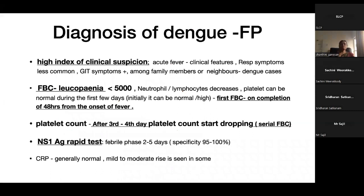How do we diagnose during the febrile phase? First, a high index of clinical suspicion for any child presenting with acute fever and some clinical features. Respiratory symptoms are not very common, but GI symptoms like diarrhea, abdominal pain, or vomiting can be present. If there is a family history or neighbours having dengue, we still need to have a high index of suspicion.